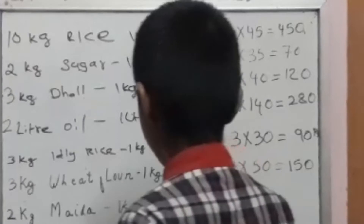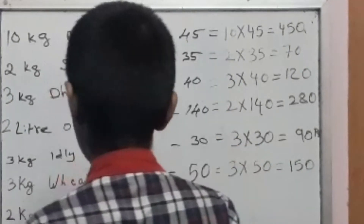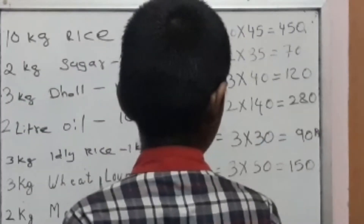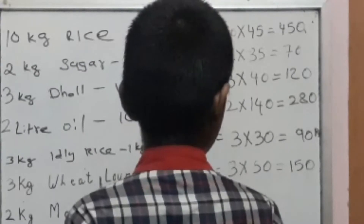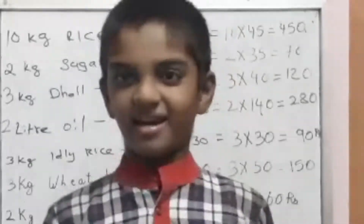2 kg maida. 1 kg equal to 30. 2 into 30. 2 zeros are 0. 2 threes are 6. The answer is 60.